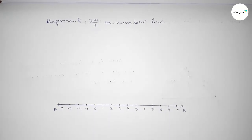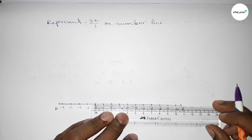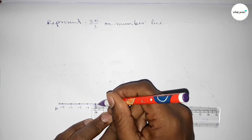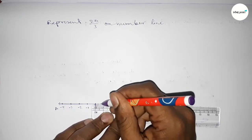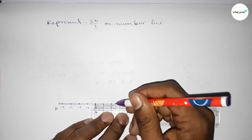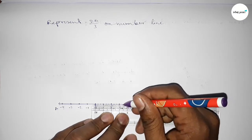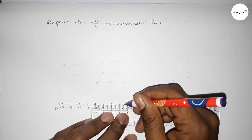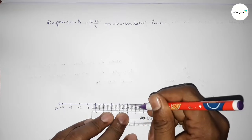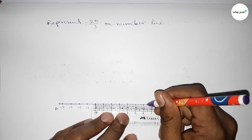Now we have to divide the distance between any two numbers into three parts approximately. Dividing between 0 to 1: this is approximately 0.3 something and this is 0.6 something. Similarly dividing between 1 to 2, 2 to 3, and 3 to 4 in the same way. By this method we can divide the distance between any two numbers into 3 parts approximately.